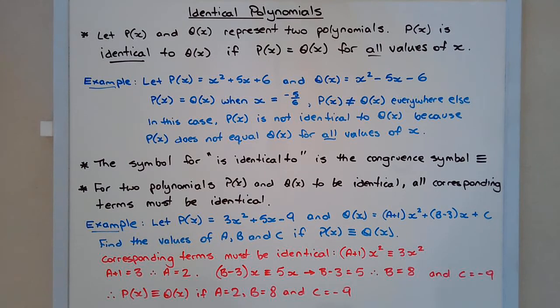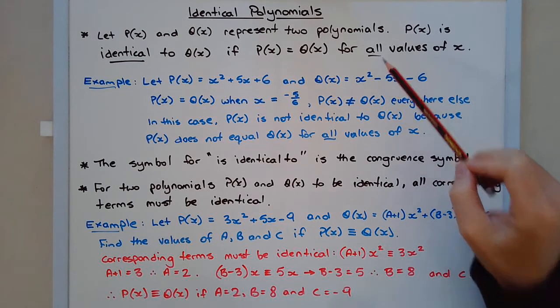Identical polynomials. Let P of X and Q of X represent two polynomials. P of X is identical to Q of X if P of X equals Q of X for all values of X.